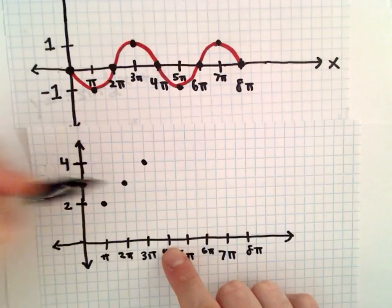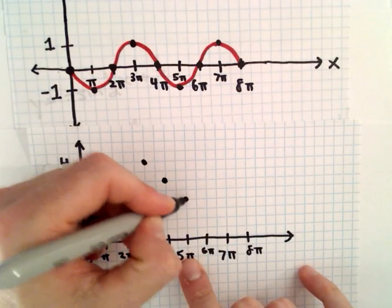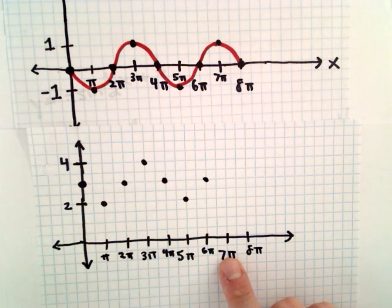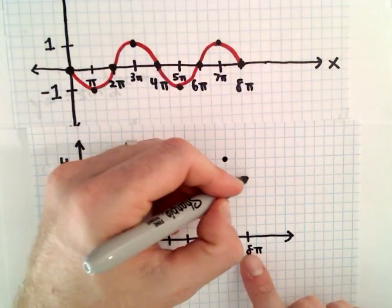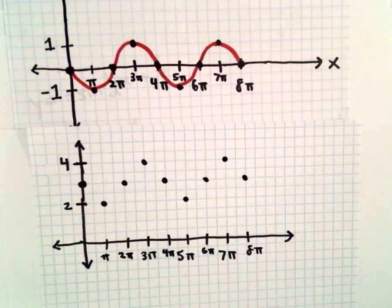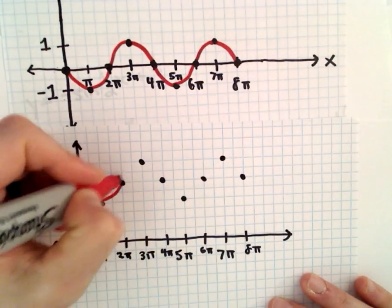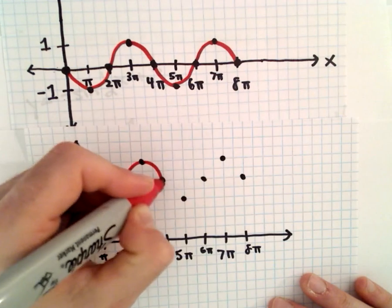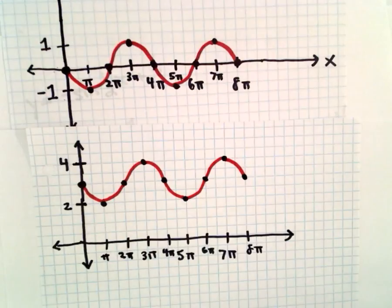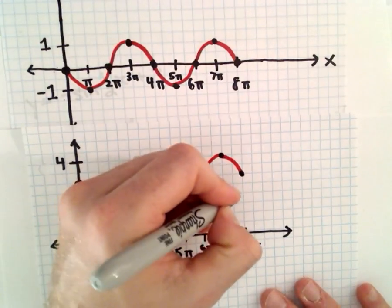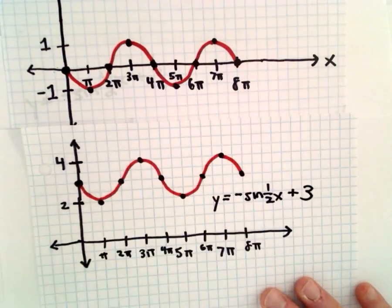At four π, we'll be back in the middle. At five π, we'll be at the bottom. At six π, back in the middle. At seven π, we'll be at the top. And at eight π, again, back in the middle. So again, the shape of the graph should be exactly the same. It hasn't been stretched or compressed or anything like that. So that would be two periods of y equals negative sine of one-half x plus three.